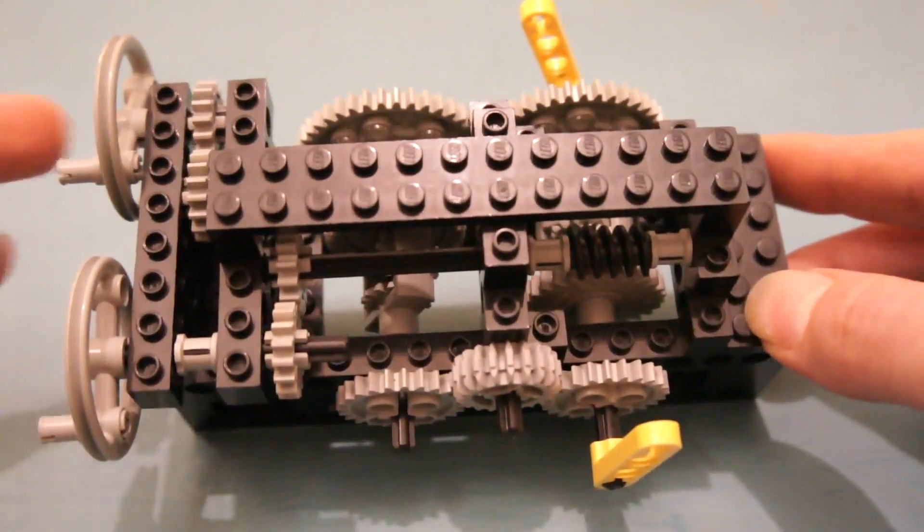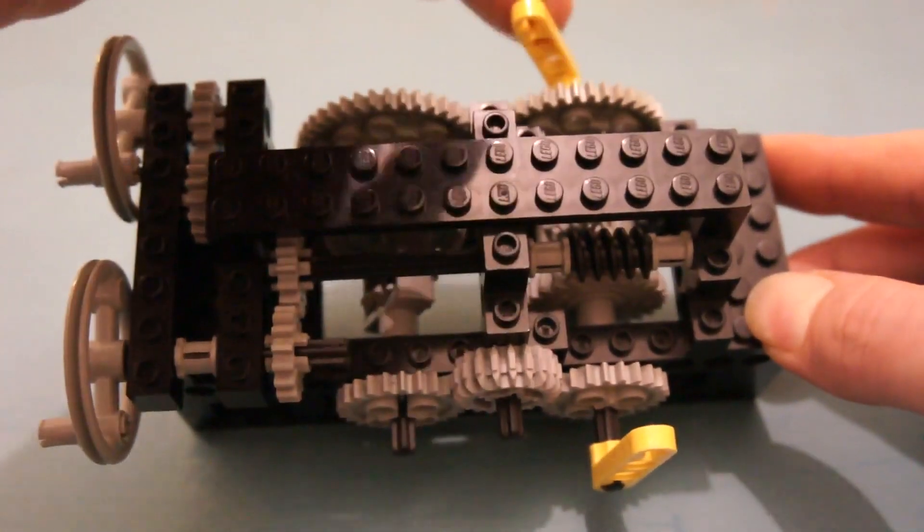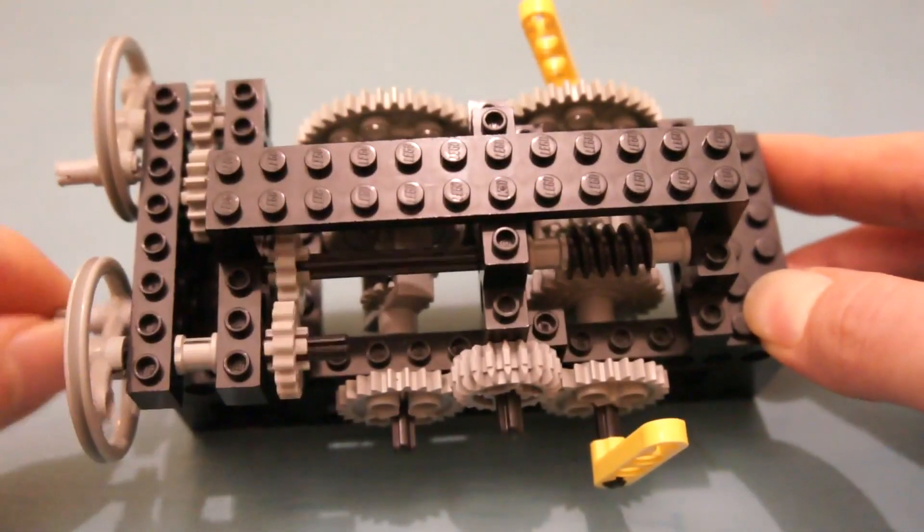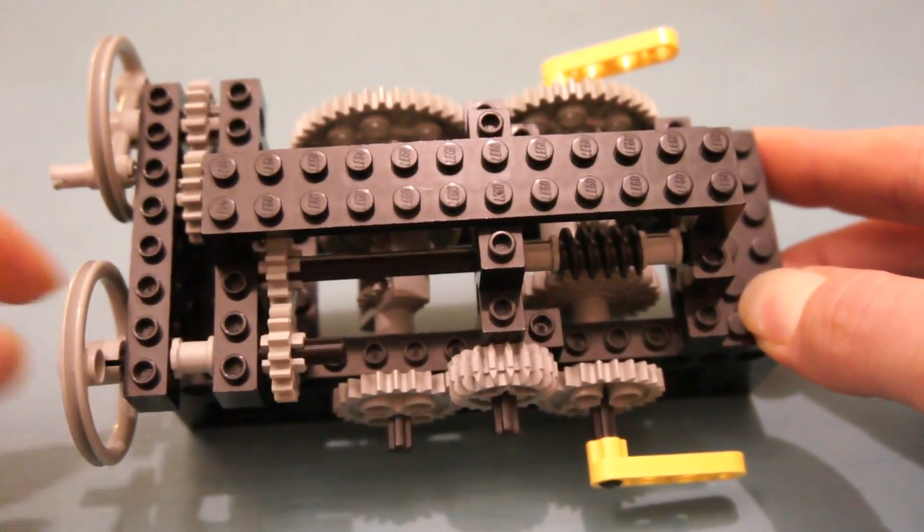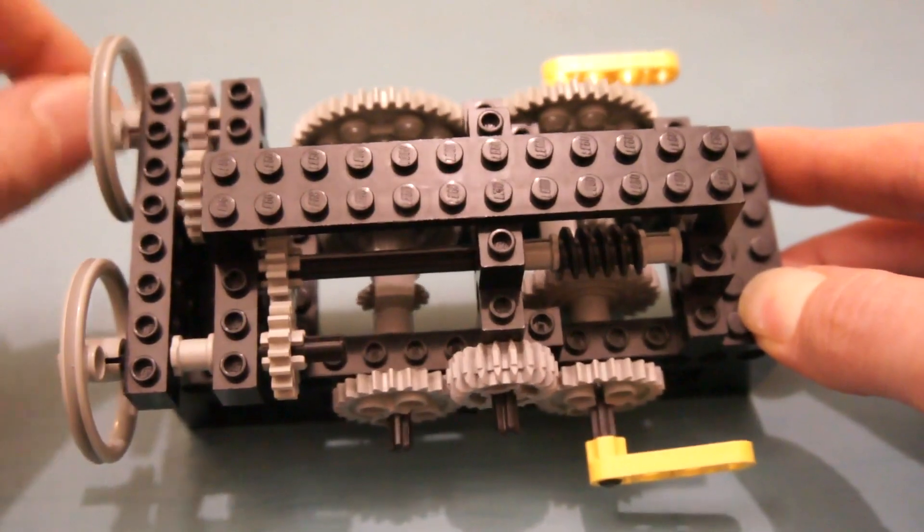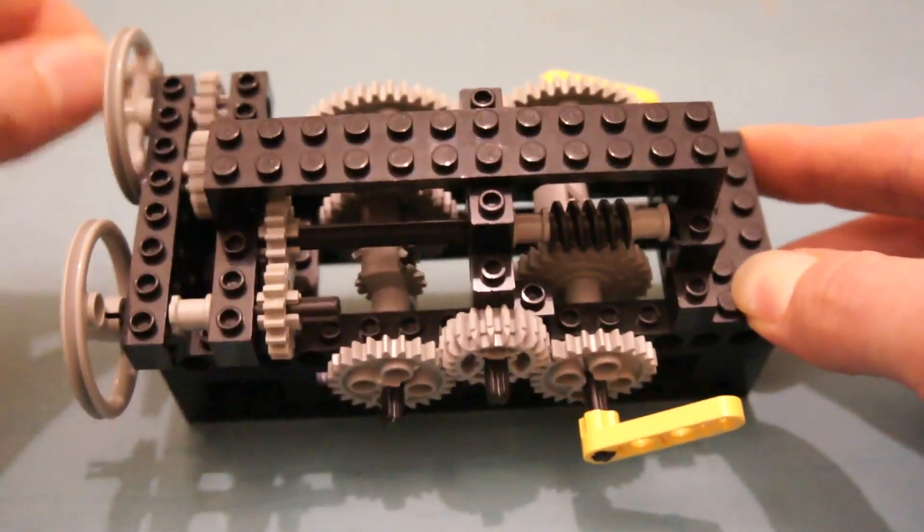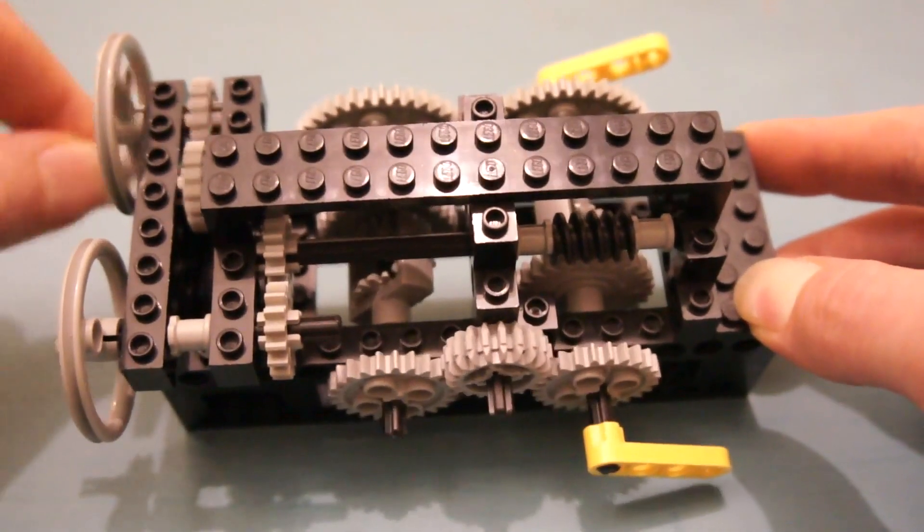It has two inputs and two outputs. If I move one of the inputs we see that the outputs move in the same direction, and if I use the other input then the two outputs are contrarotating.